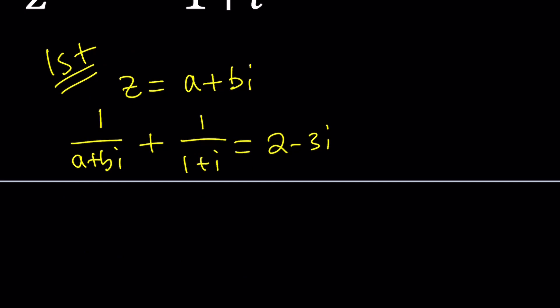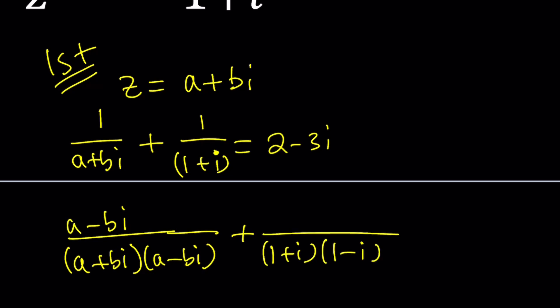Now at this point you can definitely make a common denominator. That's one way to do it. That's not recommended. It's better if you get rid of the denominators by multiplying by conjugates. So let's go ahead and do that. Multiply the first one by A minus BI top and bottom, and this one we're going to multiply by 1 minus I, so it's going to be 1 minus I over 1 plus I times 1 minus I, and this should equal 2 minus 3I.